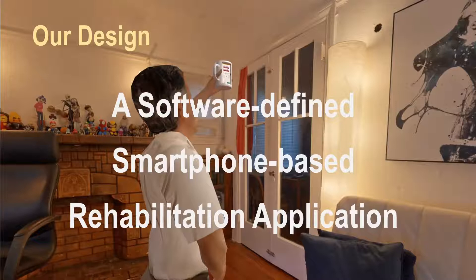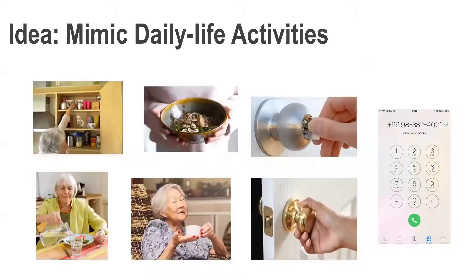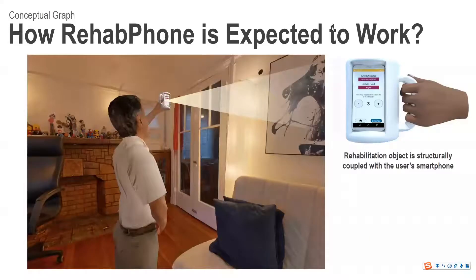Considering these requirements, in this paper we present Rehabphone, a software-defined smartphone-based application. Our idea comes from the fact that stroke survivors are expected to mimic daily life activities — for example, opening a door, inputting a password, and pouring water — in order to help them regain their skills. We expect a rehabilitation object to be tightly coupled with the user's smartphone, which allows the user to mimic daily life activities for rehabilitation, while the smartphone measures rehabilitation efficacy.